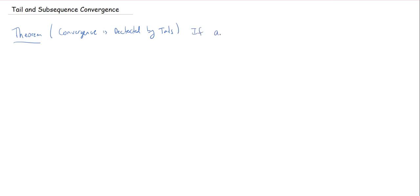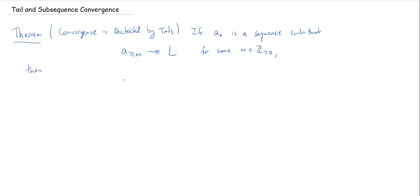So let's make this precise. If A is a sequence of real numbers such that a tail — so I have some M that I start at — if that tail sequence converges to L for some positive integer M, then the original sequence A also converges to L. I could say limit for each of these as well. So as long as one of the tails converges, then your whole sequence converges.